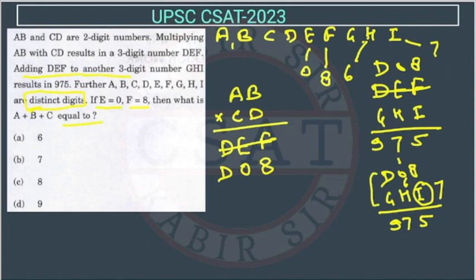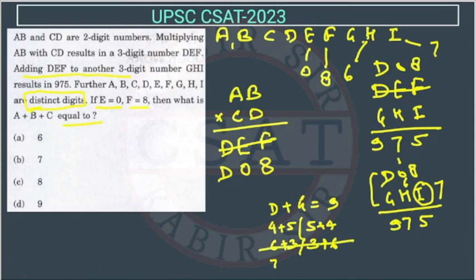So D plus G is how much? D plus G is 9. Now the possible combinations can be 4 plus 5 or 5 plus 4. Then also we will get 9, or this can be 6 plus 3 or 3 plus 6. But this cannot be 6 plus 3 because H we have already considered 6. So D cannot be 6, so this possibility is not possible. Now other possibility is 7 plus 2 or 2 plus 7. But I is 7, so we cannot take D as 7. So this is also not possible.